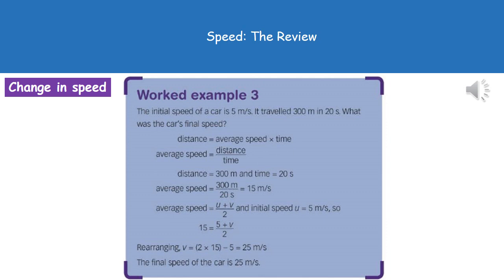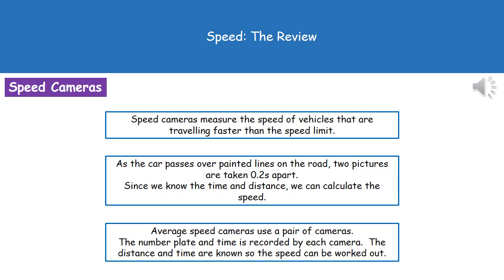The last question they might ask you about to do with speed is speed cameras. What we need to remember first of all is that a speed camera measures how fast vehicles are actually traveling, and obviously the police will use them to issue fines when people break speed limits. We've got two different types of speed camera that we need to remember how they work for.